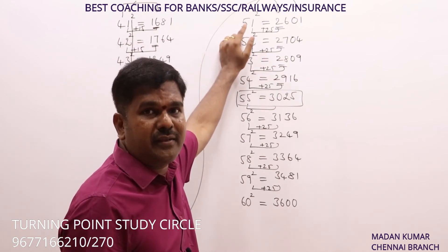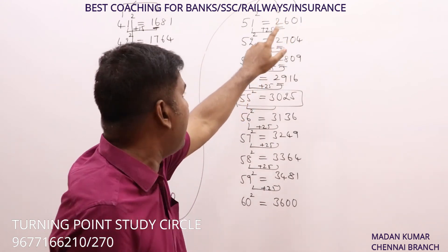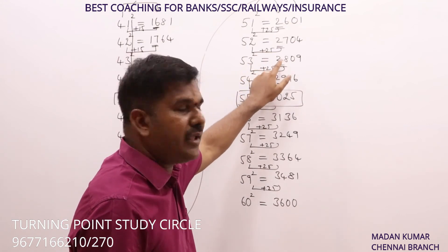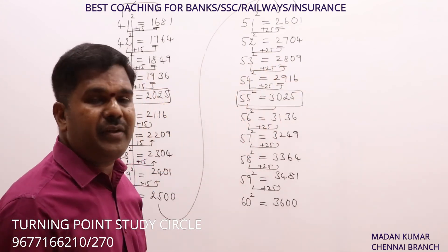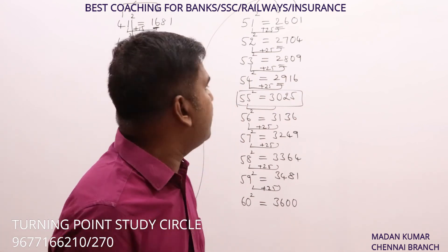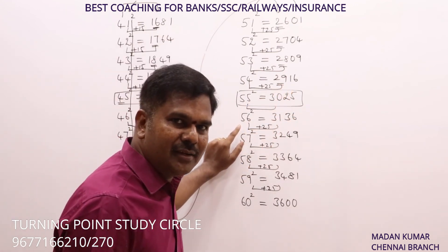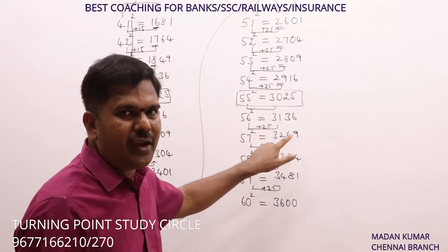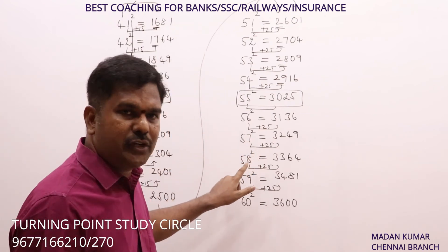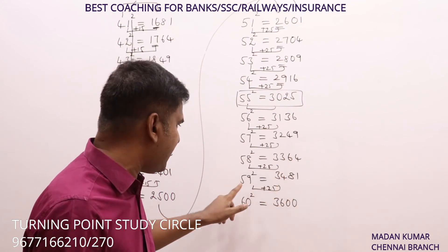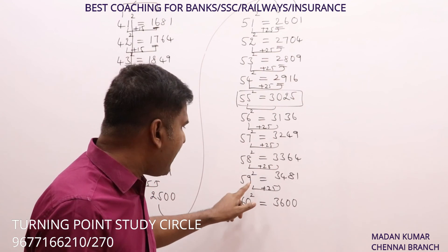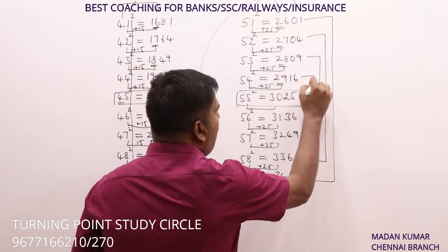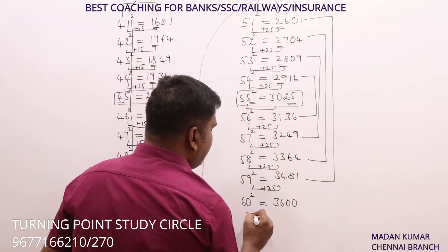Full walkthrough — 51 to 60: 51²: 1+25=26, 1²=01 → 2601. 52²: 2+25=27, 2²=04 → 2704. 53²: 3+25=28, 3²=09 → 2809. 54²: 4+25=29, 4²=16 → 2916. 56²: 6+25=31, 6²=36 → 3136. 57²: 7+25=32, 7²=49 → 3249. 58²: 8+25=33, 8²=64 → 3364. 59²: 9+25=34, 9²=81 → 3481. Note: 1² and 9² both end in 1; 2² and 8² end in 4; 3² and 7² end in 9; 4² and 6² end in 6.